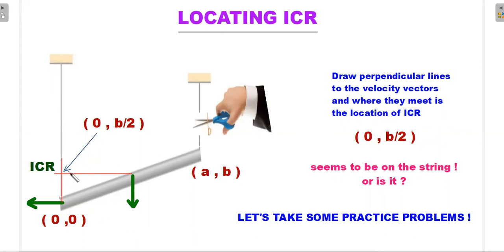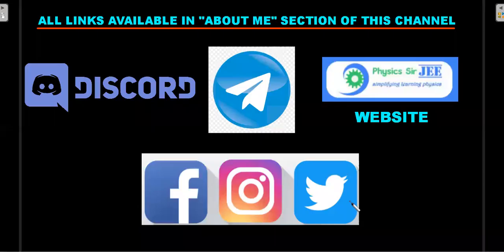The ICR at (0, b/2) seems to lie on the string — somewhere on the string at that point. Whether it is actually a material point on the string is the crux of our practice problems. I hope you're excited to look at them.